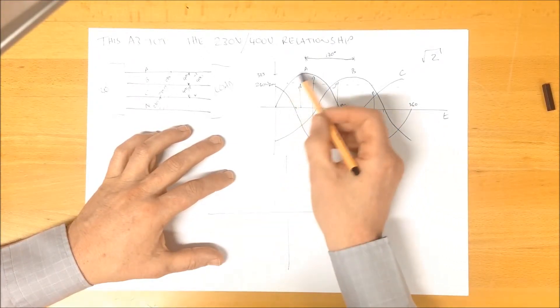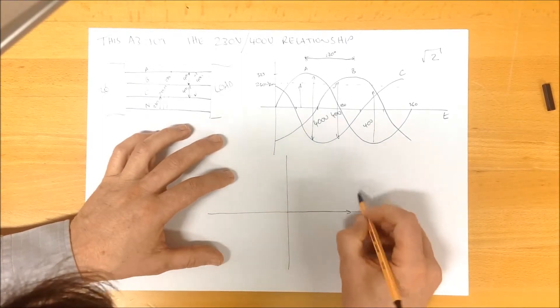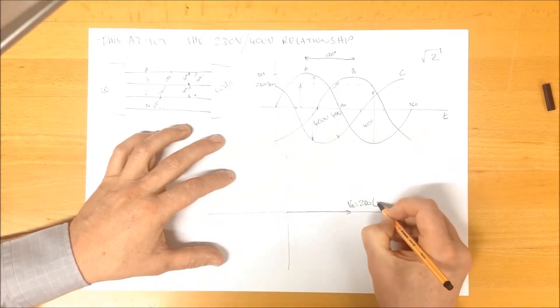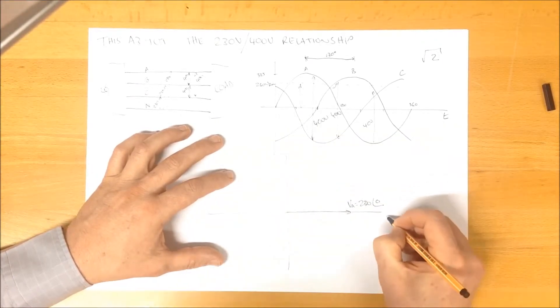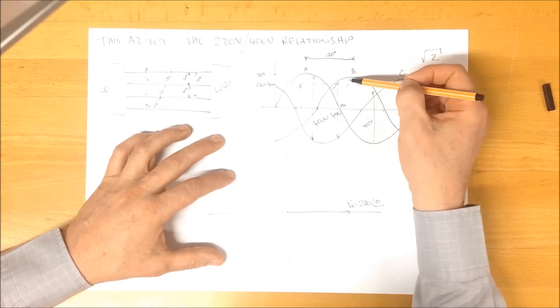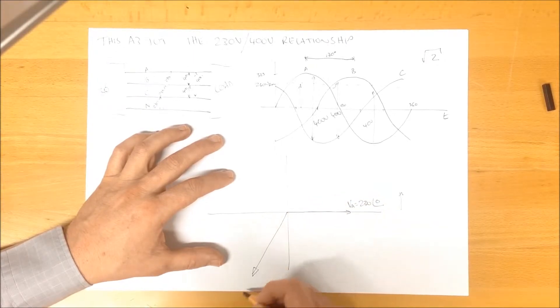We plot out phase A waveform with a magnitude of 230 volts at an angle of zero. 230 at an angle of zero. We know that phase B is lagging phase A by 120 degrees, so we can draw that down there.